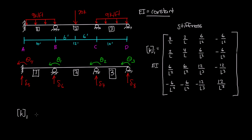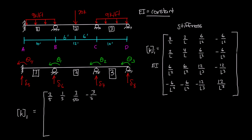We're going to get K sub 1. This matrix is going to be used as our template, and since the only variable here is L, which stands for length, we're going to take the length of element 1, plug it into all 16 of these values, and come up with the matrix for K1. Starting with 4 over L, or 4 over 10, that's 2 over 5. Then 2 over L, or 2 over 10, is 1 over 5. Then 3 over 50, because plugging 10 into L squared gives 6 over 100, which is 3 over 50. Then negative 3 over 50.